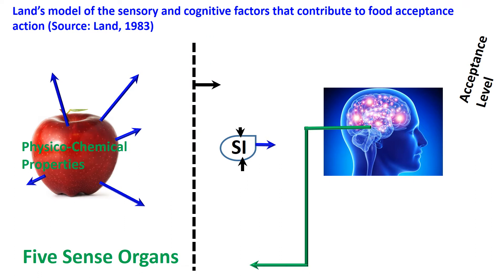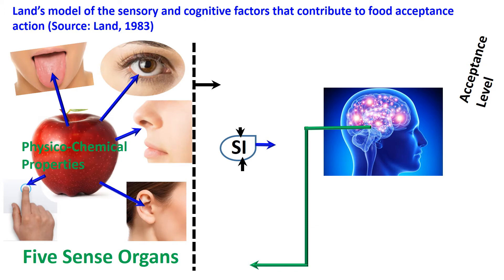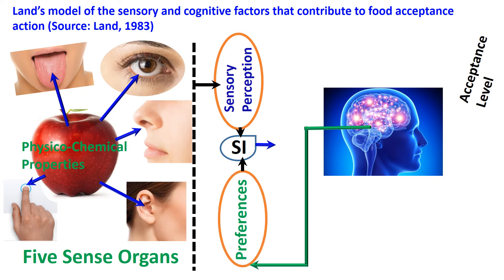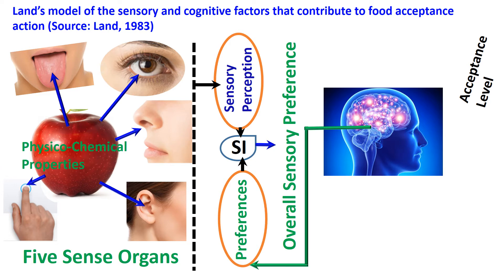In this slide I am going to explain the sensory perception process and our acceptance level. First, physical and chemical properties of a food are created by growing, processing, and storage conditions. Second, these properties are interacted by five human sense organs and create our sensory perceptions. Third, sensory perception interacts with our preferences at the sensory integration and then we receive overall sensory preferences.